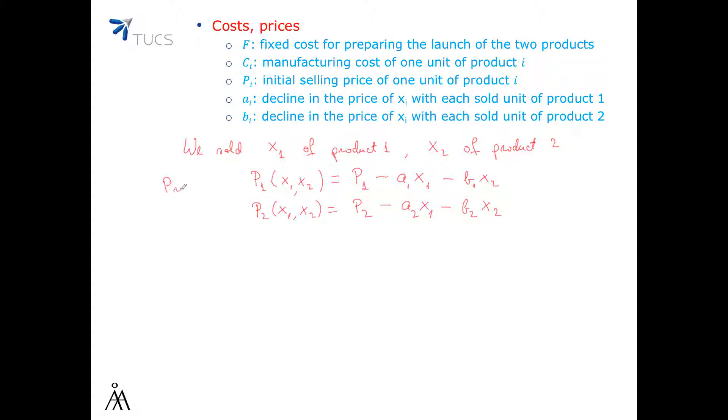So that's in terms of the price. And so the revenue that we got so far is going to be R(x1, x2) which is really x1 times P1(x1, x2) plus x2 times P2(x1, x2). And that's really x1 times B1 minus A1x1 minus B1x2 plus x2 times B2 minus A2x1 minus B2x2.